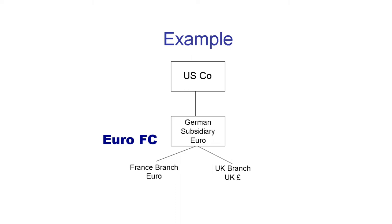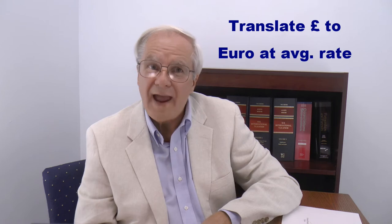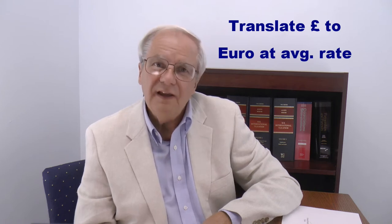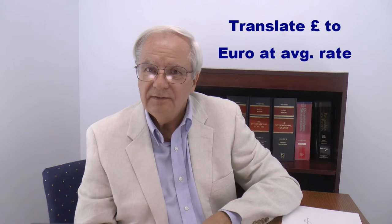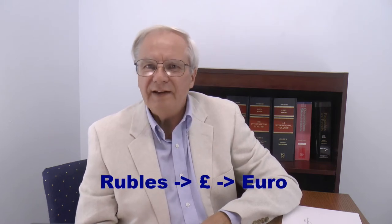For example, if we have a German subsidiary that has its own business, it likely will have the euro as its functional currency. If it has a branch in Paris, that branch likely also uses the euro, so no translation is required. If it has a branch in London, though, that branch likely uses the UK pound. The London branch records its transactions in pounds, then the results for the year are translated from pounds to euros at the average rate for the year.